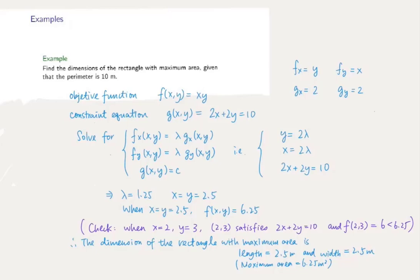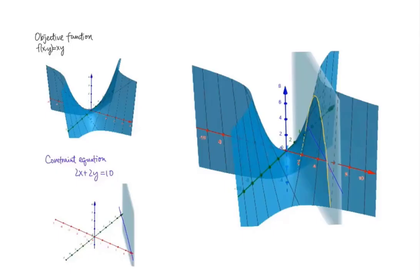The following are the graphs of the objective function and the constraint equation. When we want to find the extremum point for the function f(x,y) equals xy without any constraint, we consider all points (x,y) in the Cartesian plane to see which point gives the highest or lowest output or saddle point.